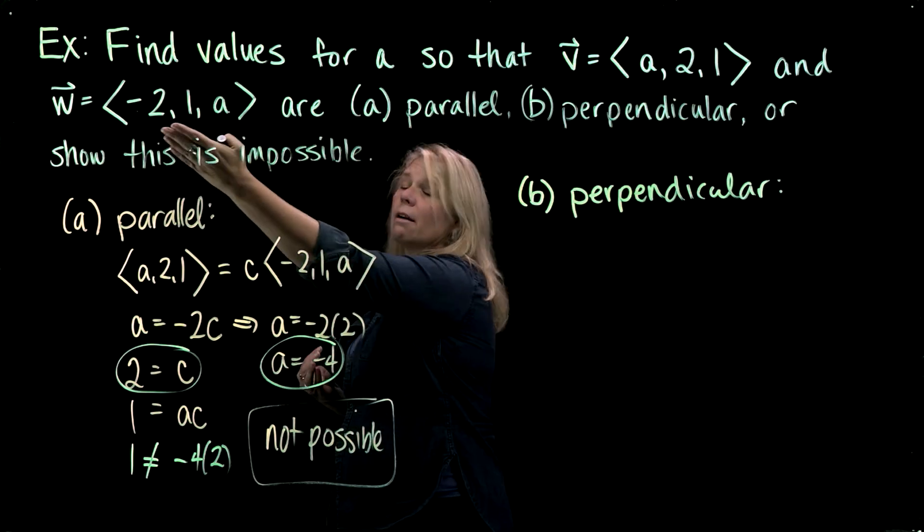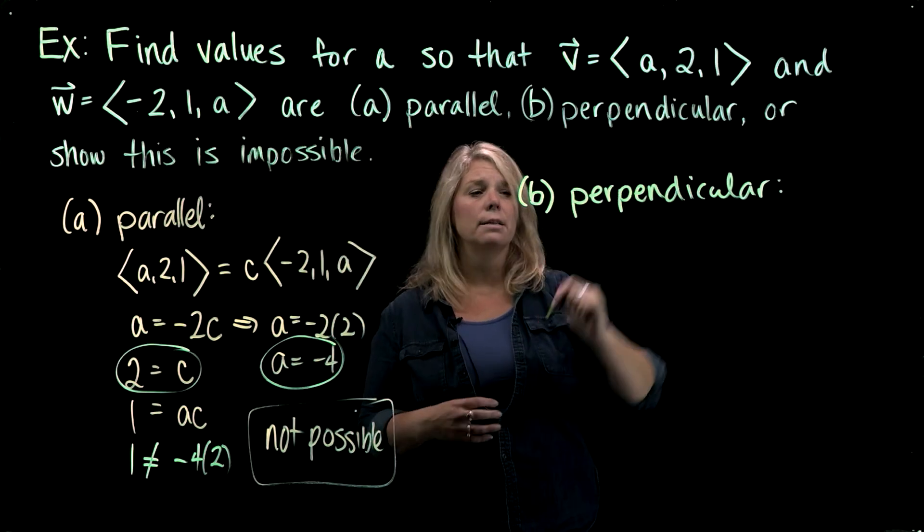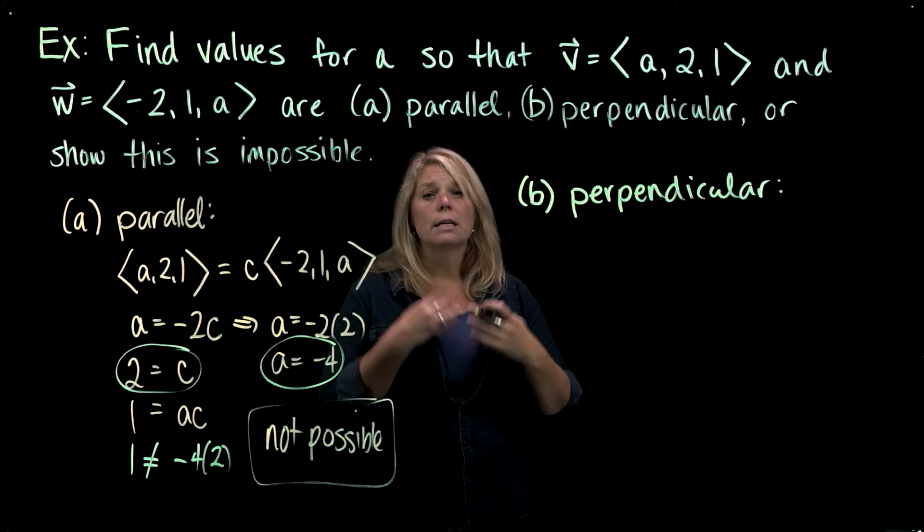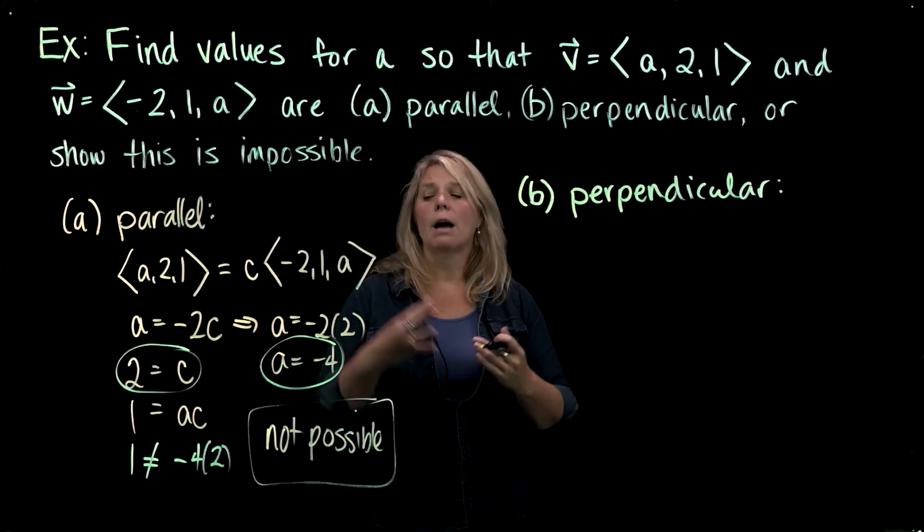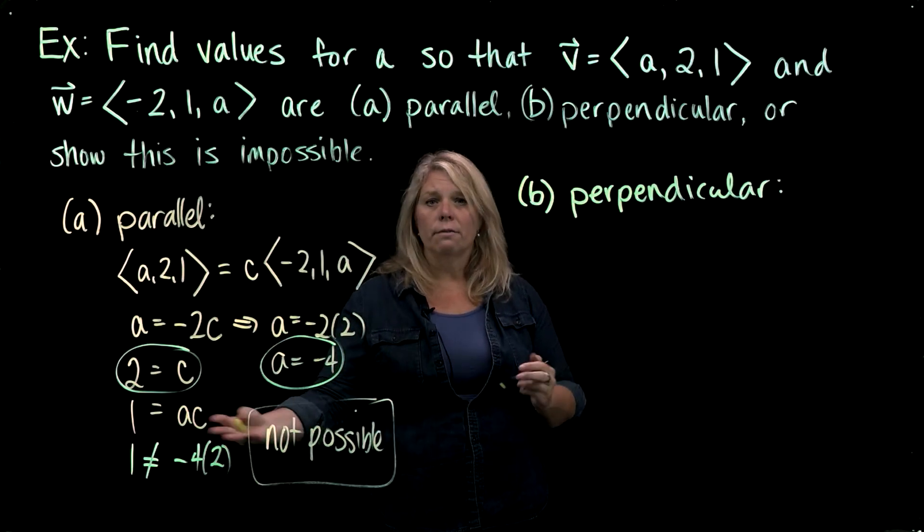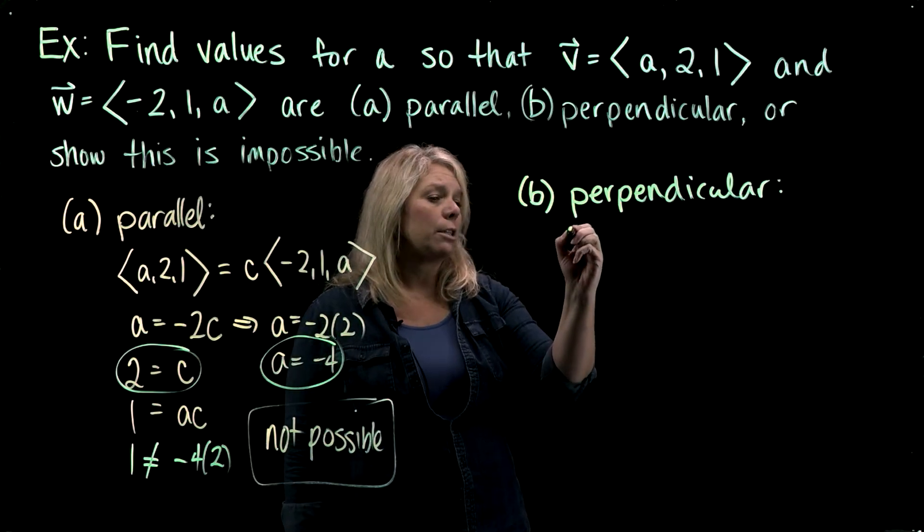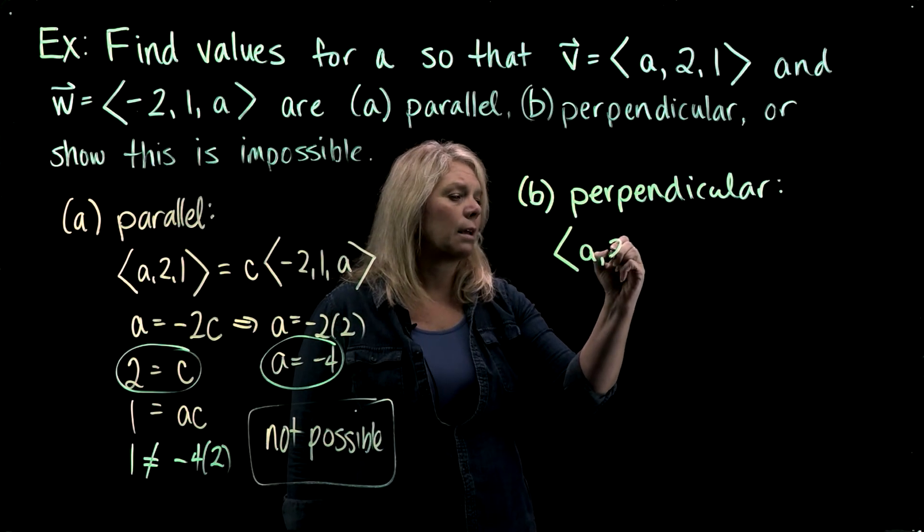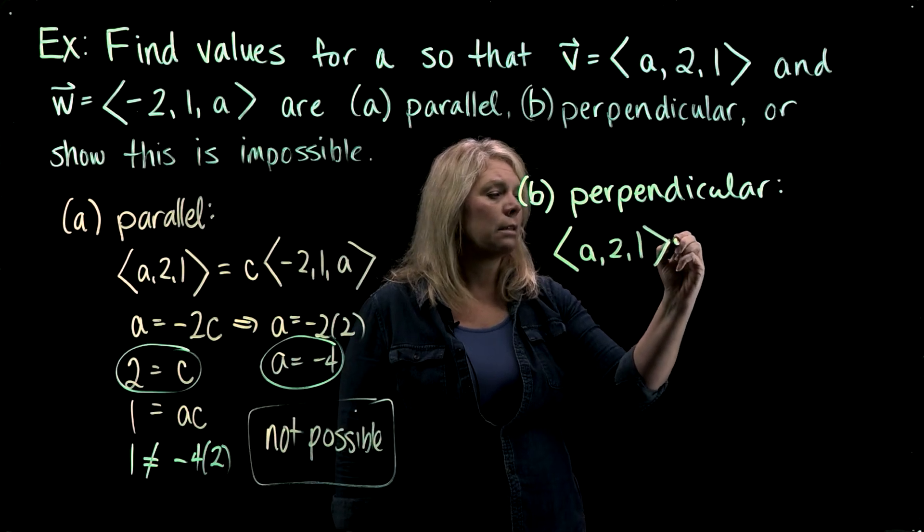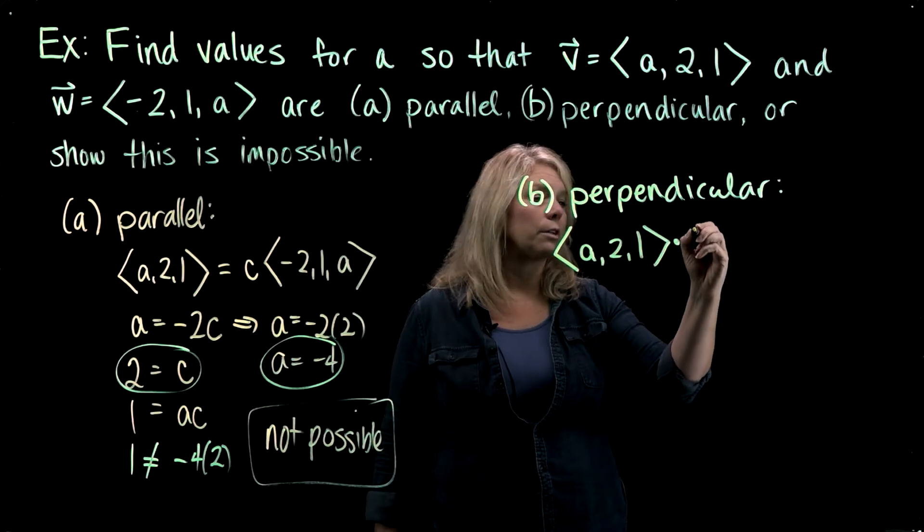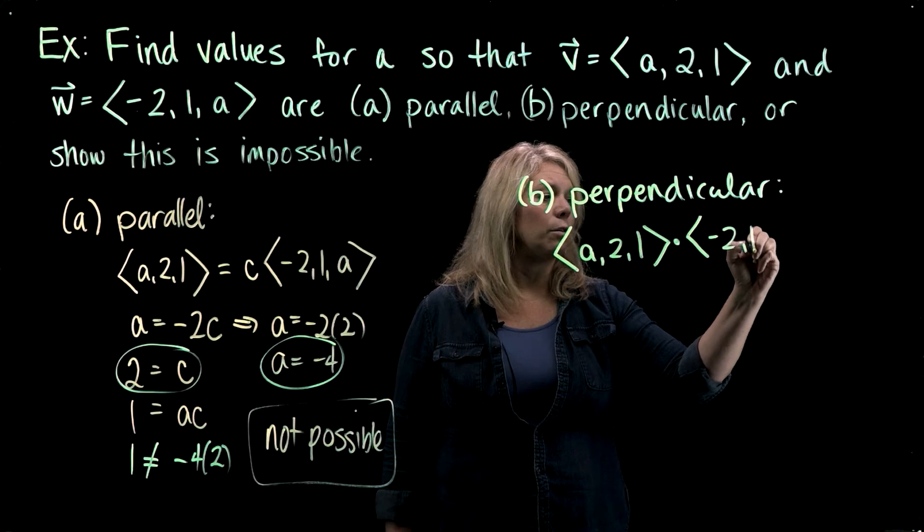Neither of these are the zero vector because you have components that are not zero. But I can use the dot product being equal to zero as an equation and use that to figure out if there are some values that make the equation true. So I'm going to write down the dot product, a, two, one, dot, my w vector, negative two, one, a.